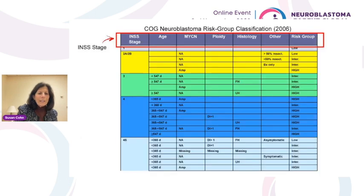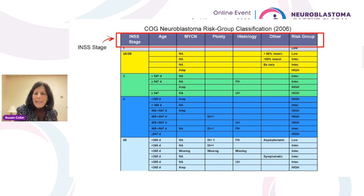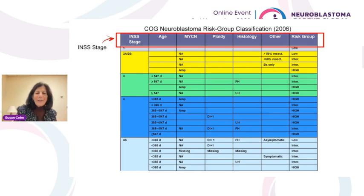In the Children's Oncology Group, up until very recently, we used a risk classification to stratify patients according to their INSS stage, age of diagnosis, MYCN status, tumor cell ploidy, histology, and other clinical features. Patients were then assigned to either low, intermediate, or high-risk neuroblastoma groups, and treatment varied accordingly. Low-risk patients received much different therapy because they had much less chance of relapsing, whereas high-risk patients had relatively aggressive tumors requiring multi-modality intensive therapy.